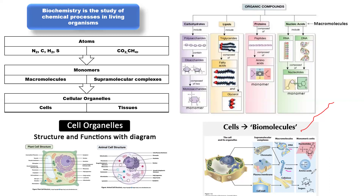From basic biology, we have what is called the organization of life. We have the chemical level, cellular level, tissue level, organ level, and systems level. These are the levels of organization of life, and it starts from the chemical level.